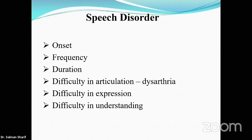In Broca's aphasia, the patient has impaired expression but relatively preserved comprehension — the lesion is in Broca's area. In Wernicke's aphasia, the patient has impaired comprehension.